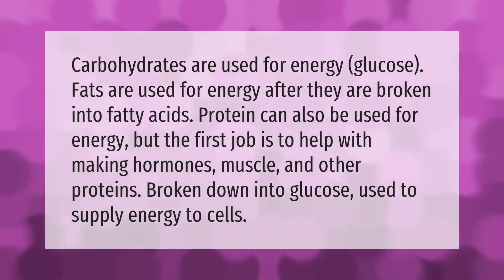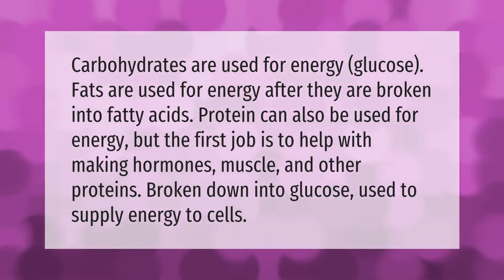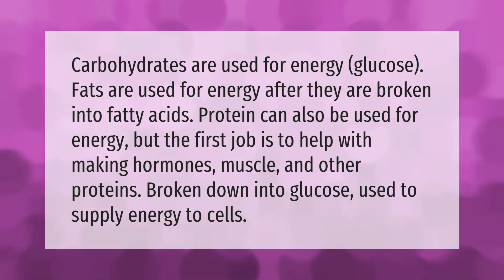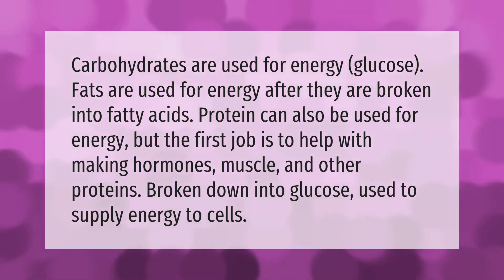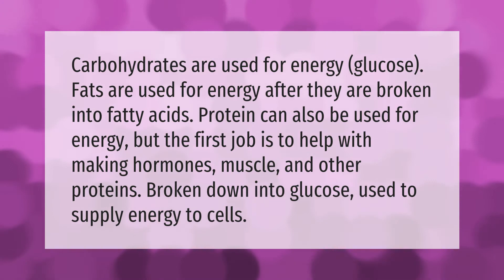Carbohydrates are used for energy — glucose. Fats are used for energy after they are broken into fatty acids. Protein can also be used for energy, but the first job is to help with making hormones, muscle, and other proteins. These are broken down into glucose to supply energy to cells.